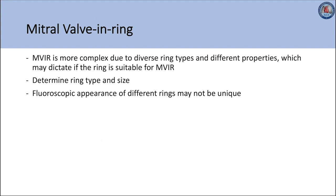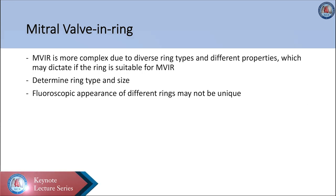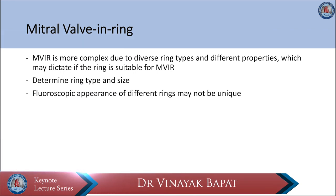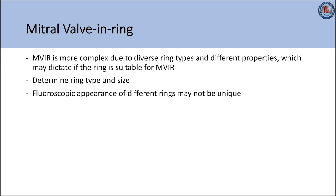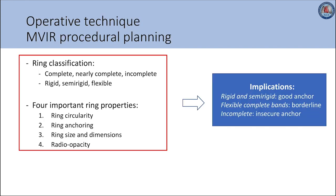Shifting our focus to mitral valve-in-ring: this procedure is more complex due to the diverse ring types and properties. Therefore, it is important to determine the ring type and size previously implanted, as this information will determine the patient's suitability for mitral valve-in-ring. Unlike surgical valves, rings may not be unique in their fluoroscopic appearance. Additionally, some rings are not visible under fluoroscopy, which can make the procedure even more challenging.